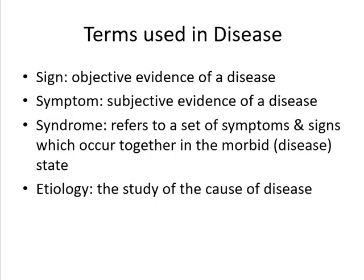Manifestation of abnormal development may lead to death, malformation, growth retardation, or functional disorders. Those are the principles of teratology. The terms used in disease include: sign — objective evidence of disease; symptom — subjective evidence of disease; syndrome — a set of symptoms and signs occurring together in a morbid disease state; and etiology — the study of the cause of disease.